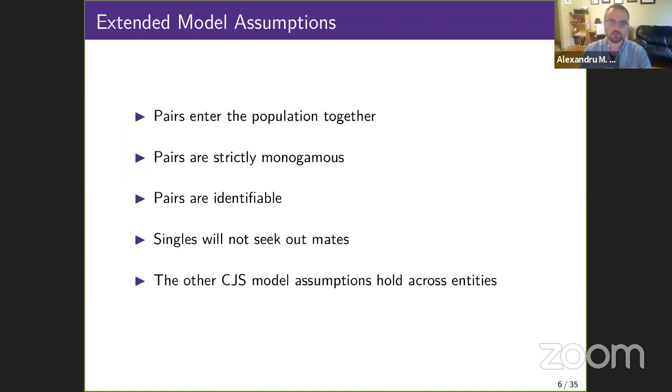To begin, consider a population of animals in which males and females form long-term pair bonds. We make the following assumptions: pairs will enter the study area together, we can identify which animals are paired up at each sampling occasion, and we assume that animals will not separate or form another pair bond during the study period. Furthermore, we're going to refer to these things called entities, which are either a pair of a male and a female or a single male or a single female.